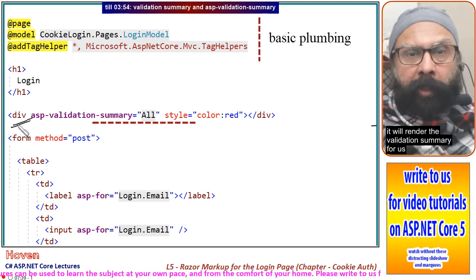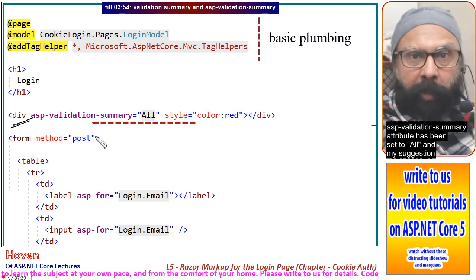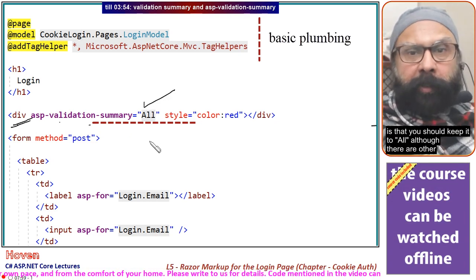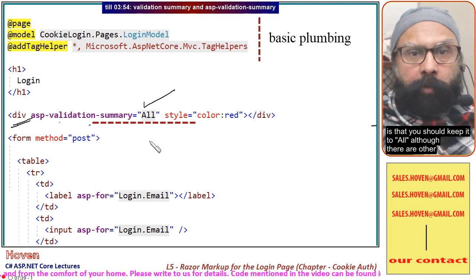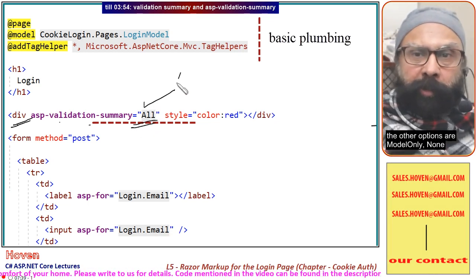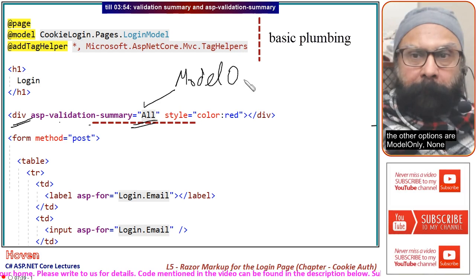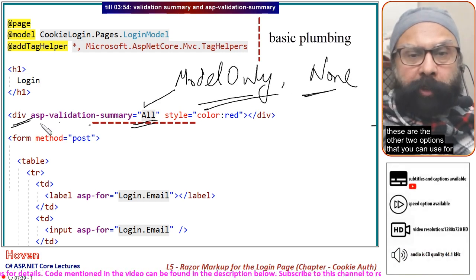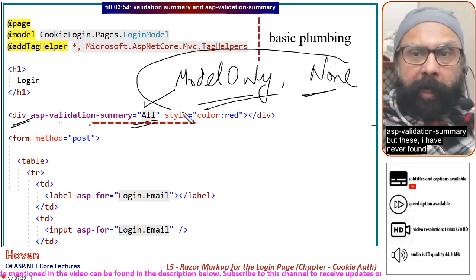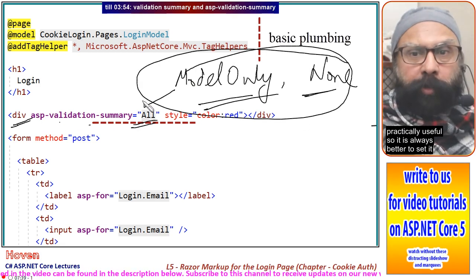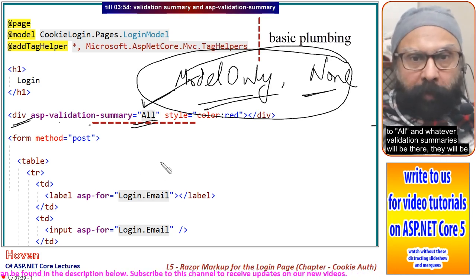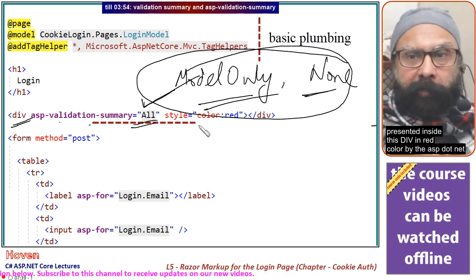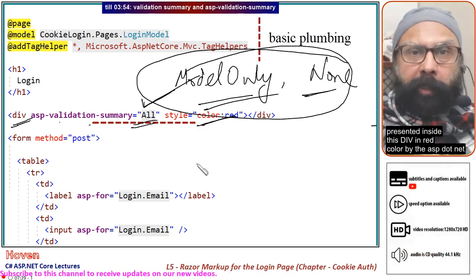Next, we have a div tag that will render the validation summary for us. The asp-validation-summary attribute has been set to 'All'. My suggestion is that you should keep it to 'All', although there are other options: 'ModelOnly' and 'None'. I have never found these two practically useful, so it is always better to set it to 'All'. Whatever validation summaries are generated will be presented inside this div in red color by the ASP.NET Core engine.